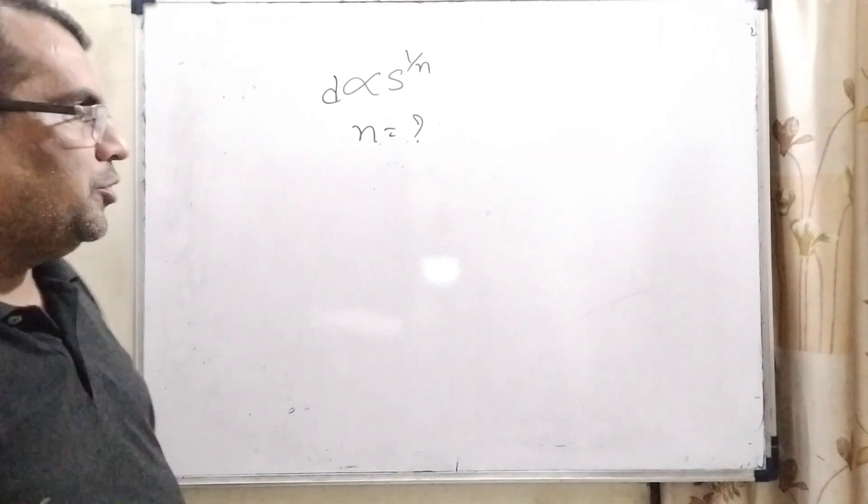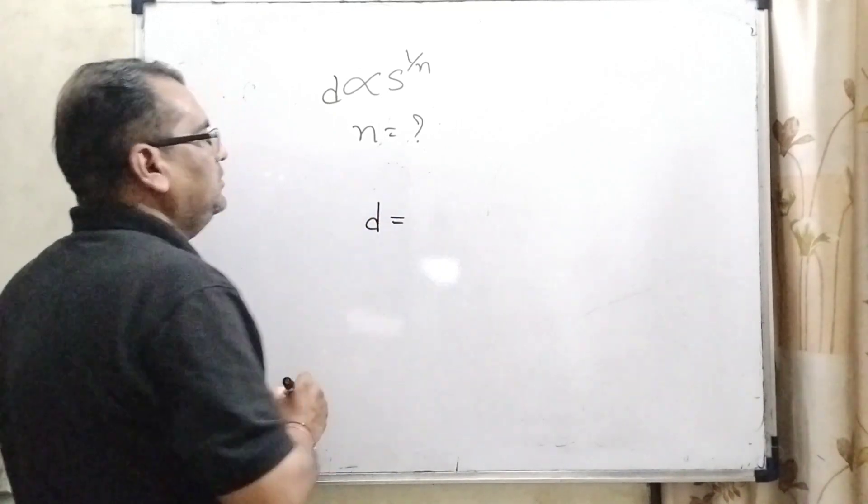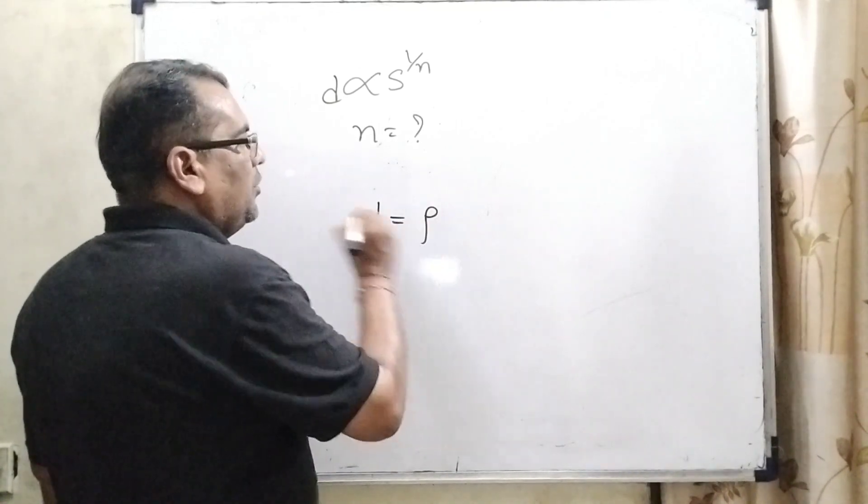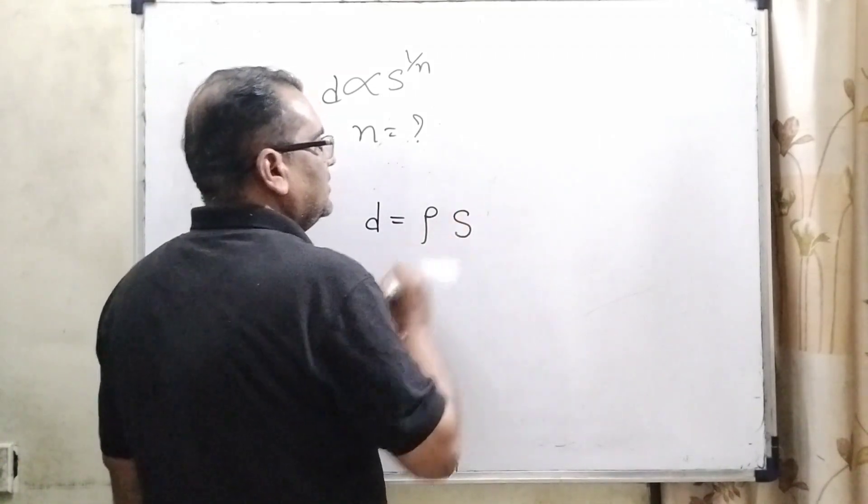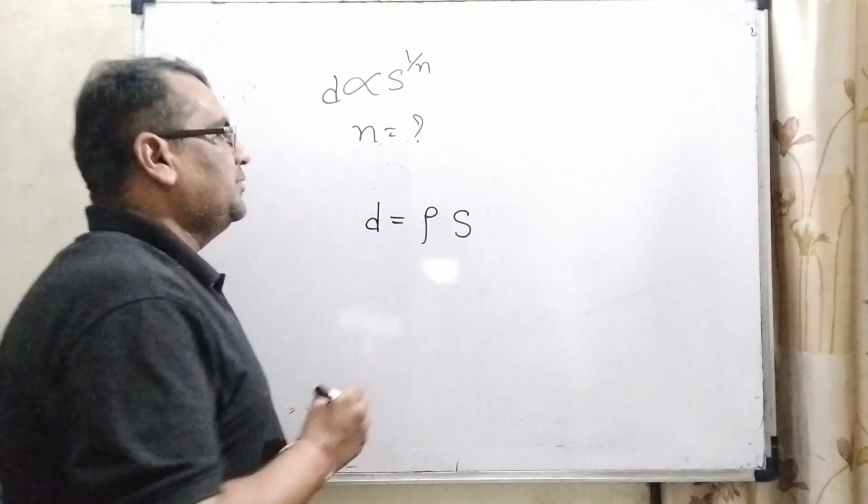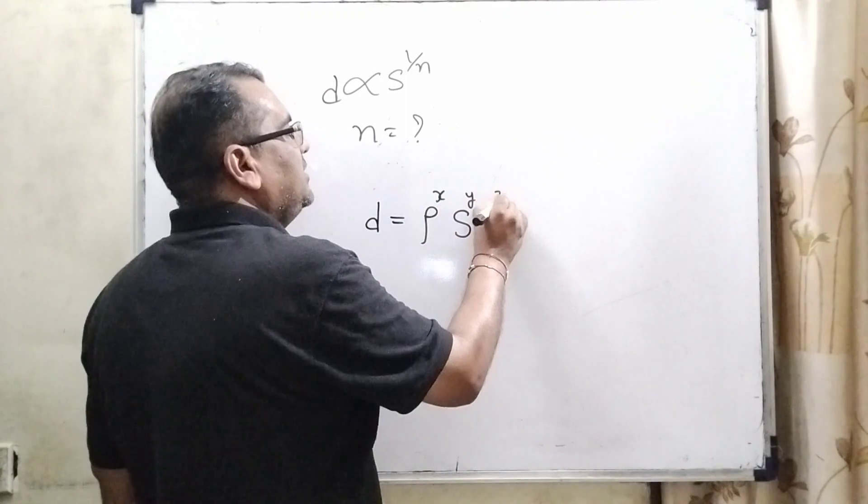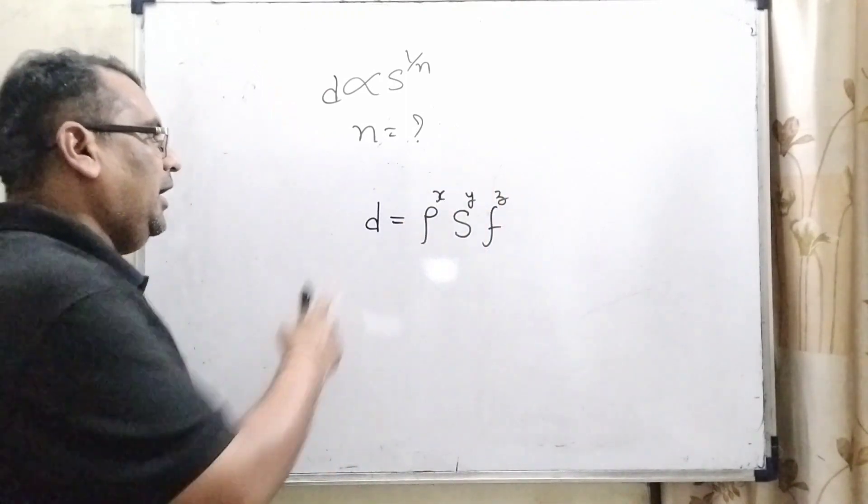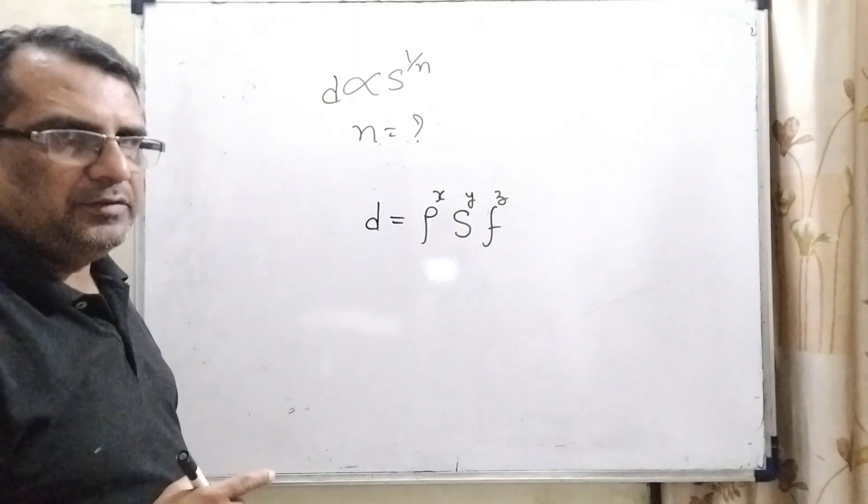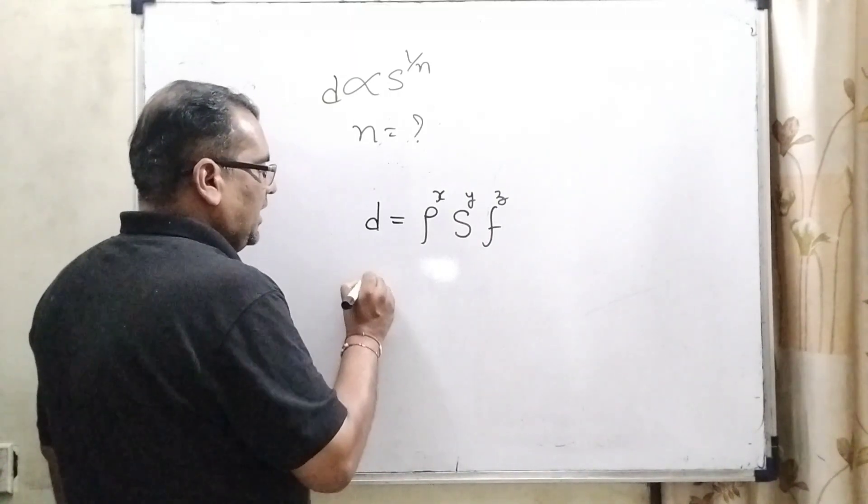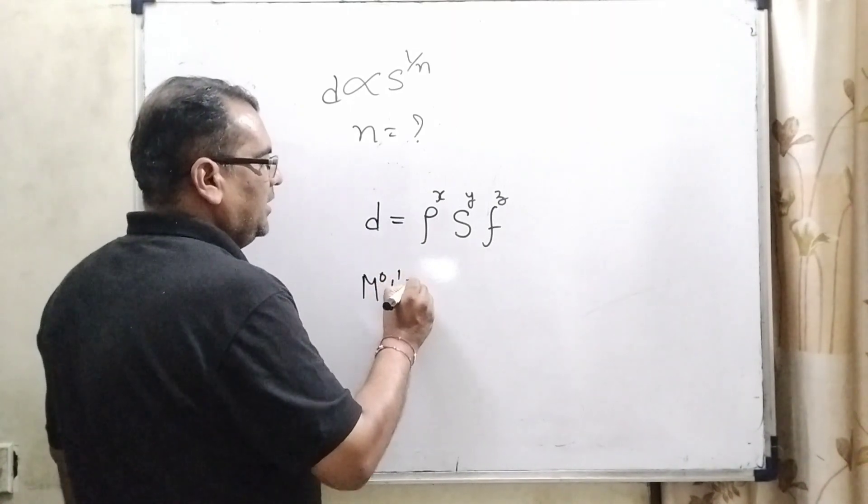Now according to the question, we have given that distance depends on mass density denoted by ρ, second, fog intensity denoted by S, and third is frequency. Here we have considered the powers x, y, and z. As we know, the dimension formula of distance is L, so it can be written as M^0 L^1 T^0.